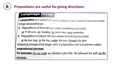Second, prepositions of place: at the bus stop, in the bus, under the tree, through the gate. Children, look at the underlined words — at, in, under, through — these are the prepositions of place. Now, we can see prepositional phrases. An adverbial phrase which starts with a preposition is called a prepositional phrase. For example: on our walk, we climb to a few hills; we follow the path up the mountain. You learned all this in the previous classes.